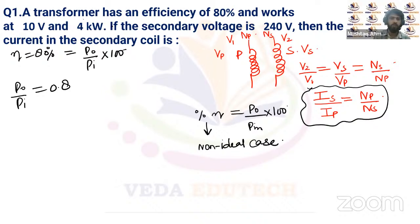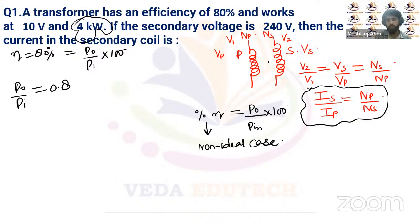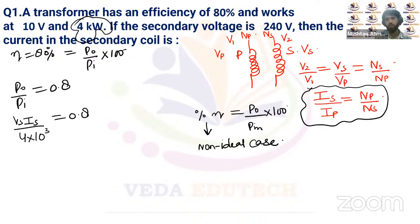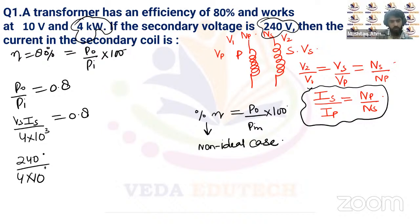The transformer works at an input supply of 4 kilowatt. Output power is Vs multiplied by Is, and input power is 4 × 10³. So we write: (240 × Is) / (4 × 10³) = 0.8. Solving: Is = 0.8 / (6 × 10⁻²) = 80/6 = 40/3 amperes.